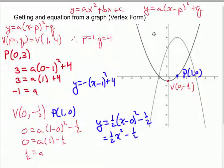So that's how we get an equation if we're given a graph. Pick off a vertex, pick off another point, substitute all four of those values in for x, y, p, and q, solve for a. Done.